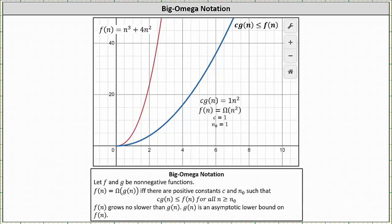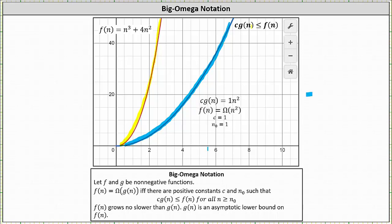Let's look at this graphically. In red, we have the graph of f of n equals n cubed plus 4n squared. In blue, we have the graph of c times g of n, which is the function 1 times n squared. The graph does verify that c times g of n, or 1 times n squared, is less than or equal to f of n, which is n cubed plus 4n squared, for n greater than or equal to 1. Note that we could have used a value for n sub zero less than 1, but remember we're using big omega notation to describe the behavior of f of n as n approaches infinity. We can also state that f of n grows no slower than g of n, and g of n is an asymptotic lower bound on f of n.